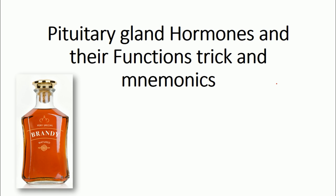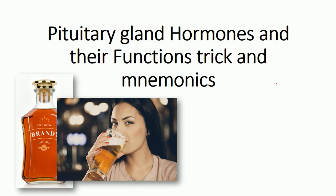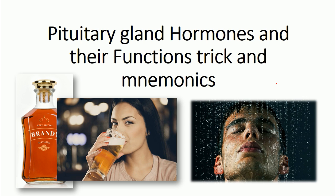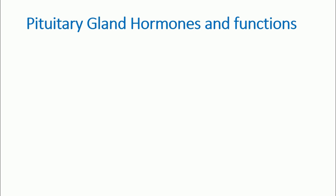You only need to remember a few things — specifically, a girl drinking beer mixed with brandy, which is kind of weird. Our idea is to create weird memorable images. So: a girl drinking brandy and beer, and a boy taking a shower. It's totally weird, but these things easily print in our brain. If you know these two images, you can reconstruct the whole table of hormones secreted by the pituitary gland.